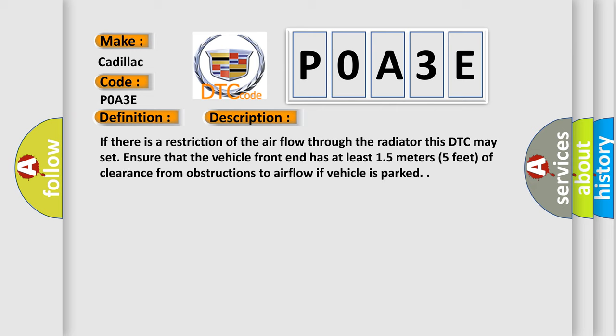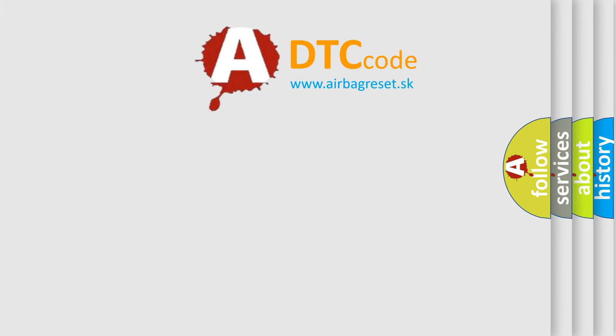If there is a restriction of the airflow through the radiator this DTC may set. Ensure that the vehicle front end has at least 15 meters, 5 feet, of clearance from obstructions to airflow if vehicle is parked. The airbag reset website aims to provide information in 52 languages.